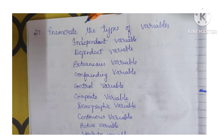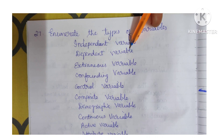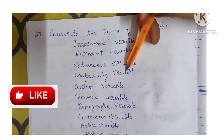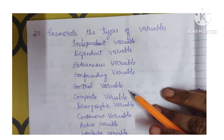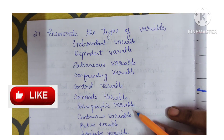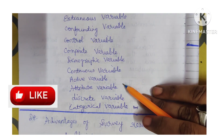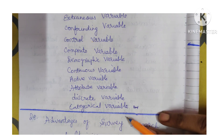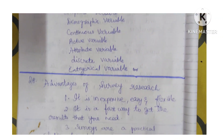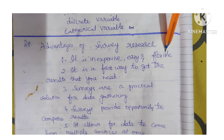Question 27: Enumerate the types of variables. There are many types: independent variable, dependent variable, extraneous variable, confounding variable, control variable, composite variable, demographic variable, continuous variable, active variable, attribute variable, discrete variable, and categorical variable.